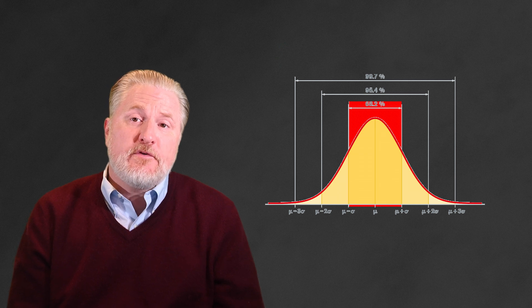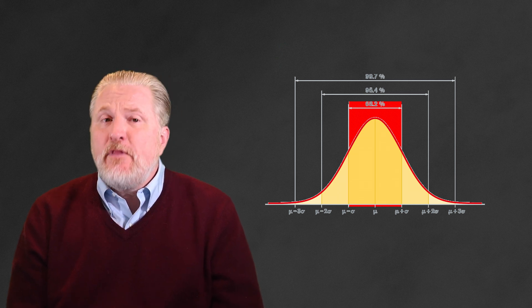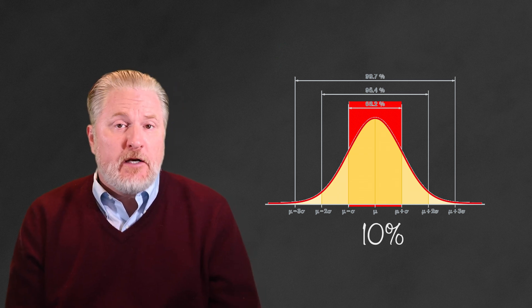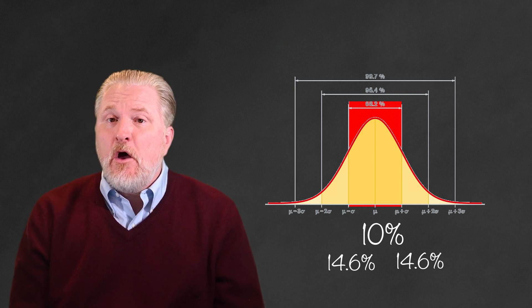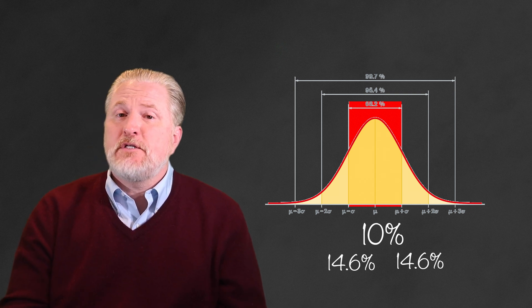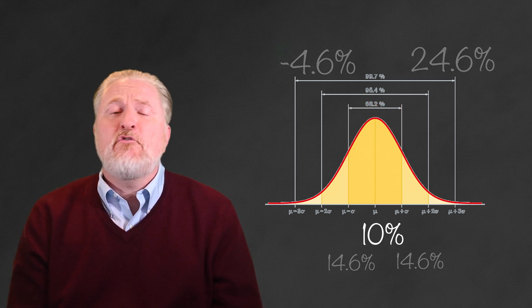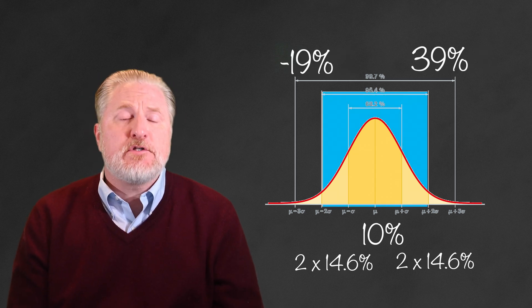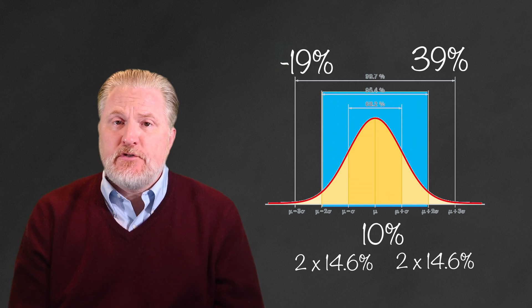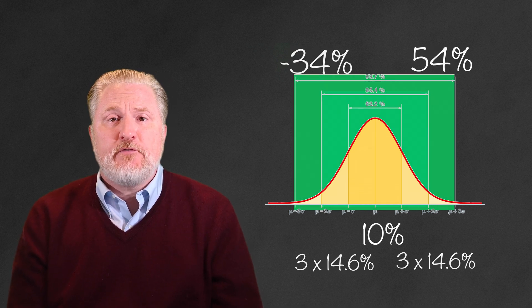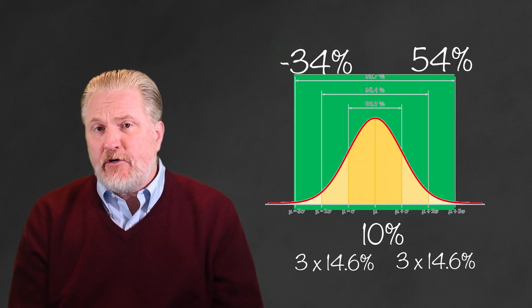The standard deviation is a measure of variability. For normally distributed data series, we know that 68% of the observations fall within one standard deviation of the mean. So in this case, 10% mean plus or minus 14.6% sigma, or from a loss of 4.6% to a 24.6% gain. We also know that 95% of the observations fall within two standard deviations of the mean, and 99% of the observations fall within three standard deviations of the mean.